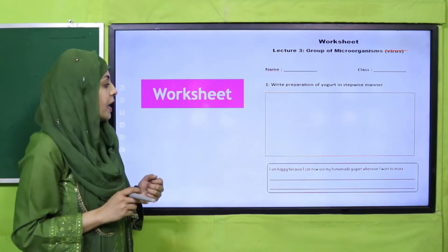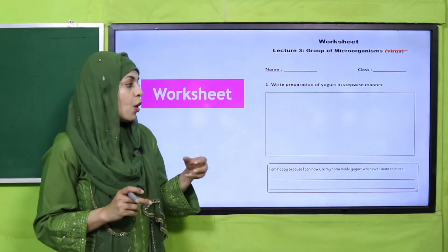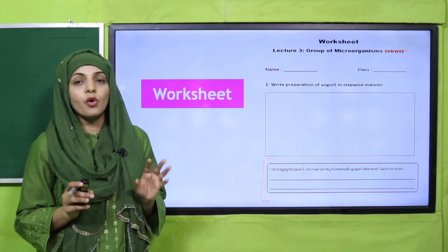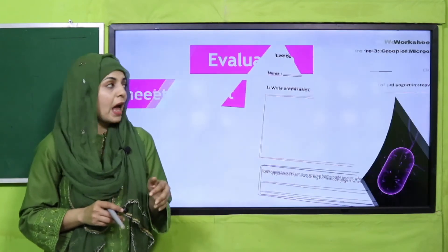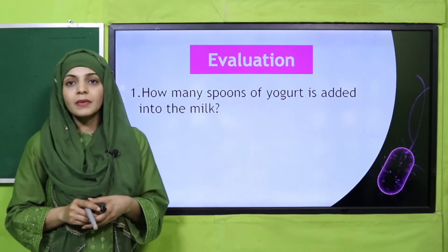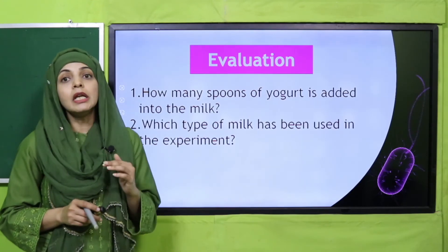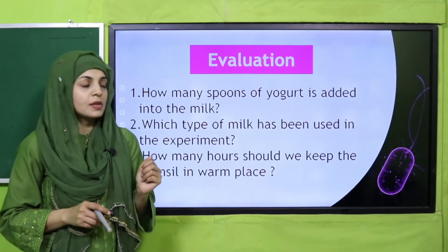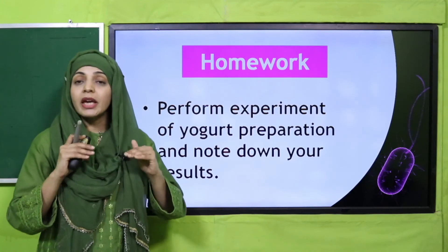The yogurt already has bacteria and it is extremely good for our health. Write the name of your favorite dishes that use yogurt — you can ask your mother for ideas. Complete the worksheet and submit it to your teacher. For the evaluation: how many spoons of yogurt are added? I added half a teaspoon. What type of milk is used? Lukewarm. How many hours should we keep the utensil in a warm place? Five to six hours.